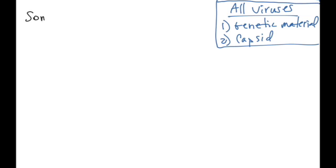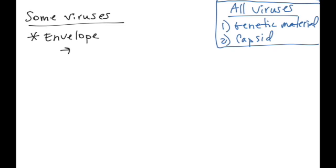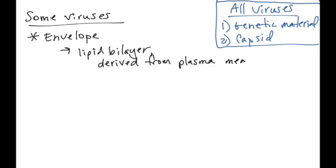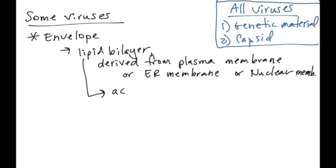Some viruses, not all, but some viruses have an additional structure, and that's called the envelope. In viruses, the envelope is simply a lipid bilayer derived from either the cell cytoplasmic membrane or the cell's endoplasmic reticulum. In very rare instances, it can be derived from the cell's nuclear membrane. Viruses get their envelopes when they are leaving the host cell in order to go out and find new cells to infect.